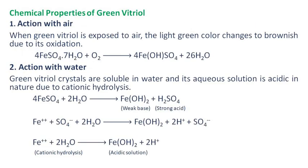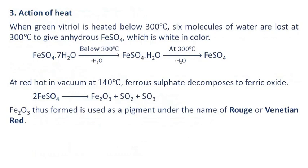Chemical Properties of Green Vitriol. Action with air: when green vitriol is exposed to air, the light green color changes to brownish due to its oxidation. Action with water: green vitriol crystals are soluble in water and its aqueous solution is acidic in nature due to cationic hydrolysis. Action of heat: when green vitriol is heated below 300°C, six molecules of water are lost at 300°C to give anhydrous ferrous sulfate, which is white in color. At red heat in vacuum at 140°C, ferrous sulfate decomposes to ferric oxide, which is used as a pigment under the name of rouge or Venetian red.